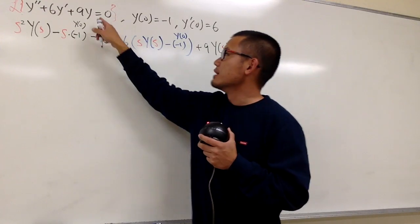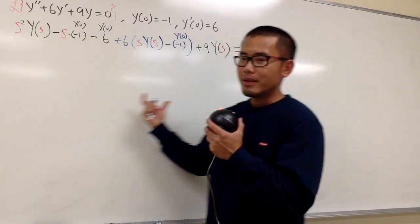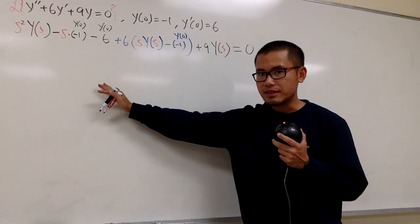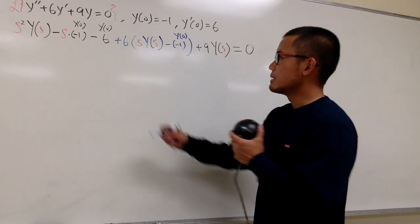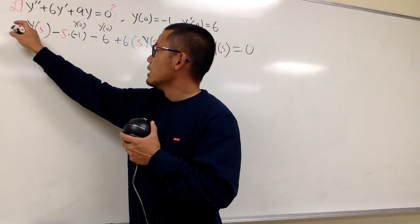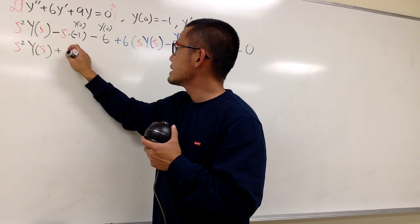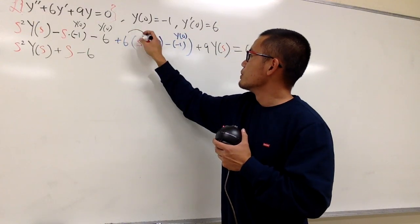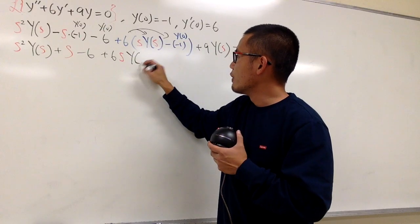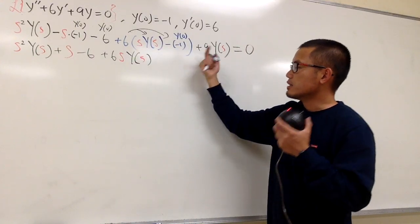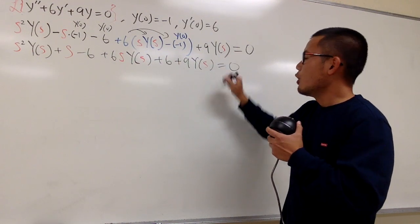So far, so good. The usual deal is that we have to collect all the Y(s) terms and isolate Y(s) on the left-hand side, putting everything else on the right-hand side. Let me do one more step and clean things up. This is s squared times Y(s), and then this and that becomes plus s, and then this is minus 6. Here I will have to distribute: 6 times that is plus 6s times Y(s). And 6 times negative 1 becomes positive, so plus 6. And then this is plus 9 times Y(s). All my s terms are in red.